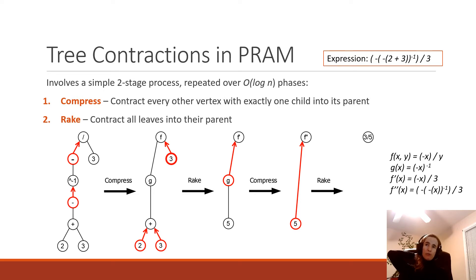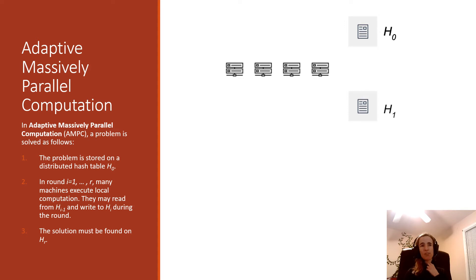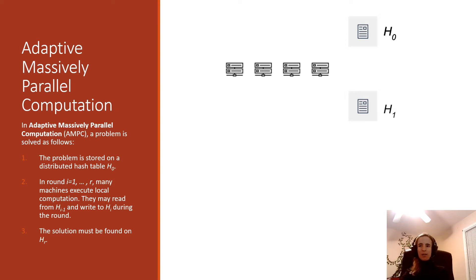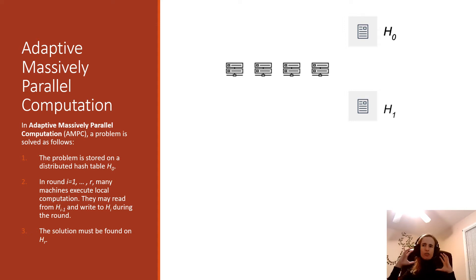We're going to improve the communication complexity of this algorithm by looking to another model of computation: adaptive massively parallel computation, also known as AMPC. It is the successor model to massively parallel computation (MPC), which is a popular framework generalizing MapReduce and similar systems. AMPC was introduced just a few years ago and is a slightly stronger version of MPC — it can solve things more efficiently and is highly practical given how commodity hardware works.